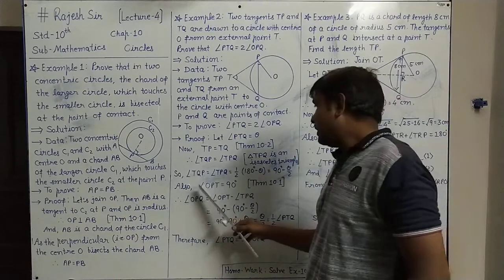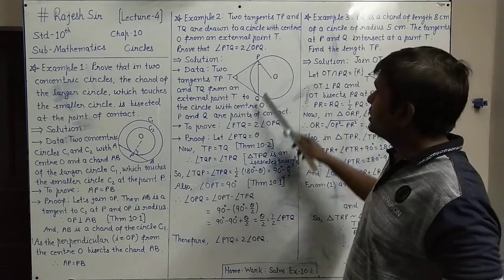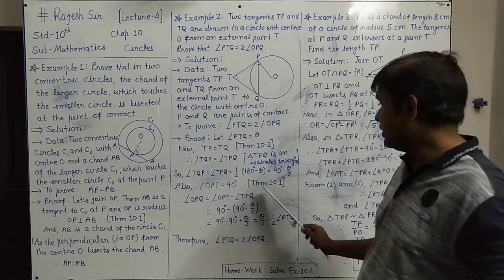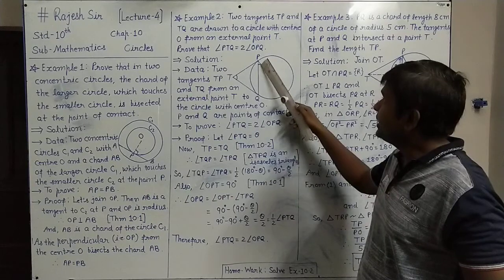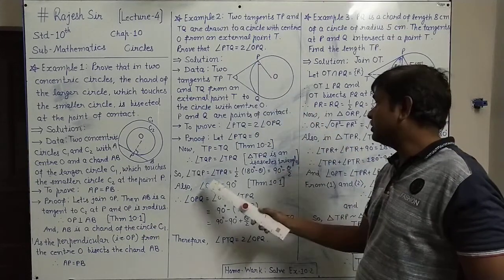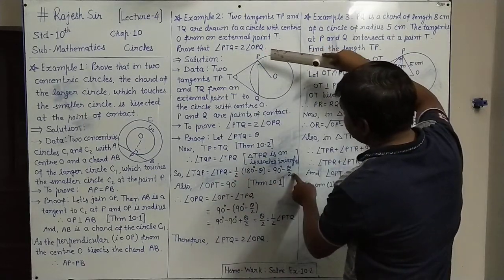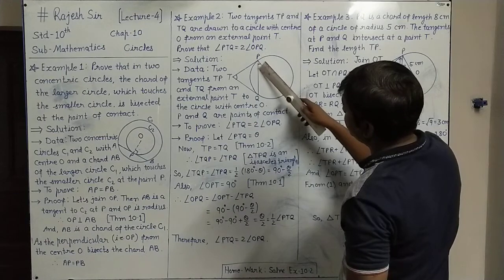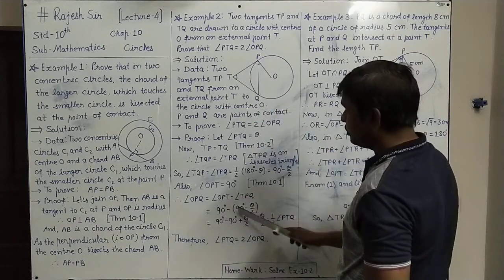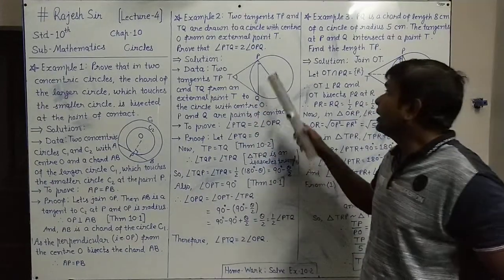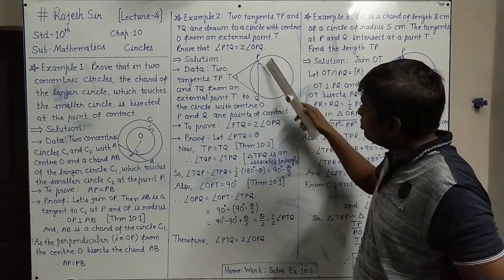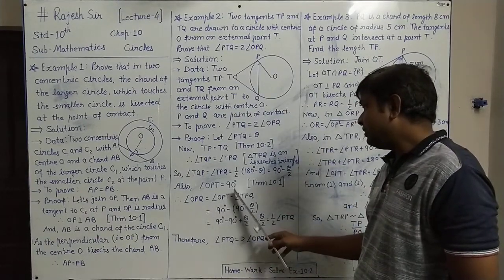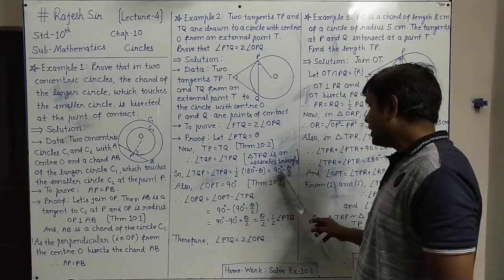Also, angle OPT is 90° because OP is the radius and TP is the tangent, and the radius is always perpendicular to the tangent at the point of contact (Theorem 10.1). The full angle OPT is 90°, and angle TPQ is 90° minus theta by 2.